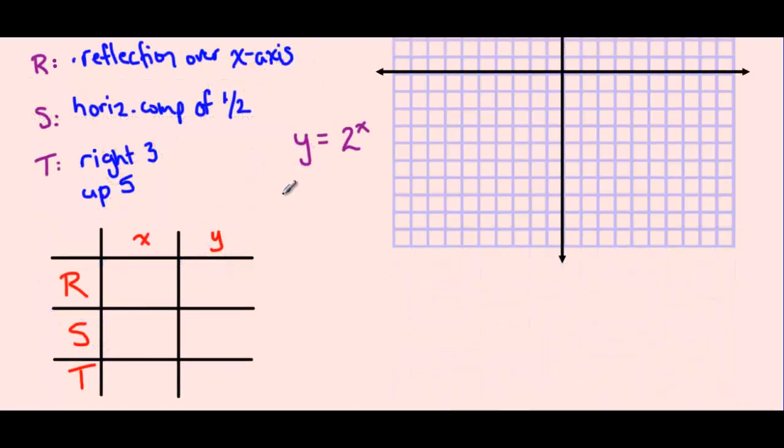It looks like we have 4 different transformations here: a reflection over the x-axis, a horizontal compression of 1 half, moving right 3 units, and moving up 5 units. And so let's put these into our RST chart. A reflection over the x-axis will actually affect y values, as we're flipping things from above the x-axis to below the x-axis. So we're going to multiply all of our y values by negative 1. A horizontal compression of 1 half affects our x values by multiplying all of our x values by 1 over 2.